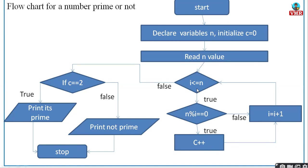Now 3 ≤ 4: true. 4 modulus 3 = remainder 1, so condition is false — increment i to 4. Then 4 ≤ 4: true. 4 modulus 4 = 0, so c increments again: c becomes 3, and i becomes 5. Now 5 ≤ 4 is false — exit the loop. Check: is c = 2? My c value is 3, which is not equal to 2, so it is 'not a prime number'.